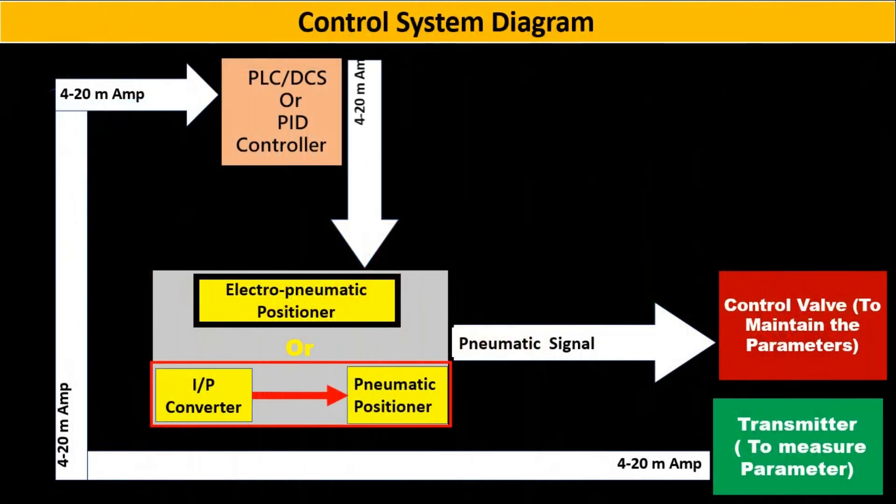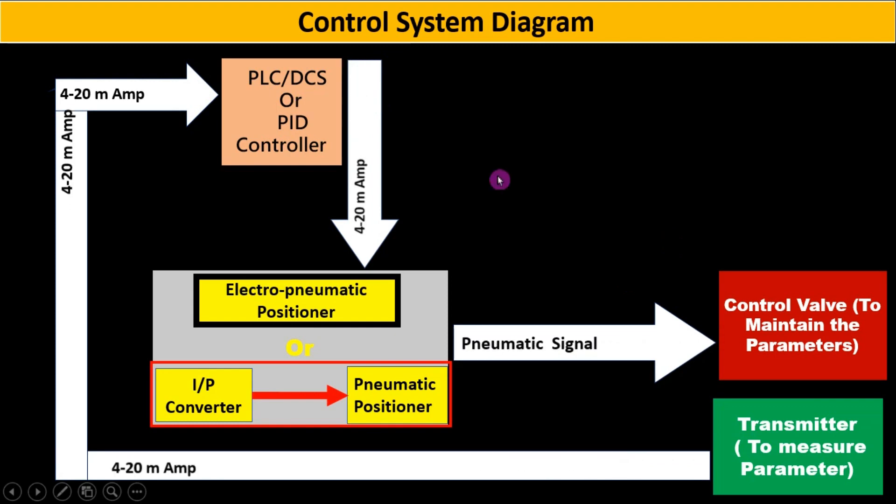Now see the control system diagram. The control system diagram is explained by animation. 4 to 20 mA signal is given by controller. This 4 to 20 mA is provided to electro pneumatic positioner. Sometimes we use I2P converter and pneumatic positioner in place of electro pneumatic positioner. The output of electro pneumatic positioner or pneumatic positioner is a pneumatic signal.